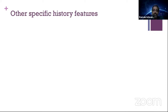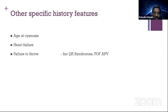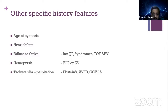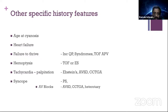From history you can find: age at cyanosis, presence or absence of heart failure, failure to thrive in early infancy indicating a previous increased pulmonary blood flow situation that converted to Eisenmenger. Hemoptysis can occur in both tetralogy and Eisenmenger. History of palpitation from tachycardia is classic of accessory pathways, commonly associated with Epstein's anomaly, atrioventricular canal defect, CCTGA, and heterotaxis syndromes. History of syncope is generally more consistent with PS, or rarely Eisenmenger syndrome, or AV blocks in AVSD, CCTGA, and heterotaxis syndromes.